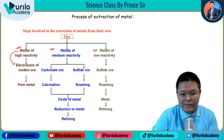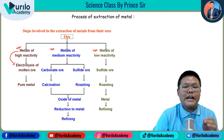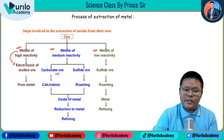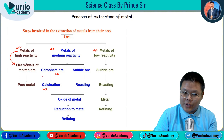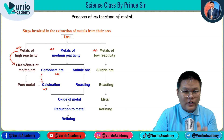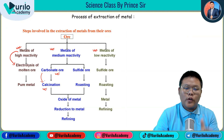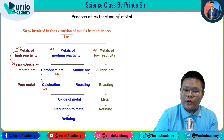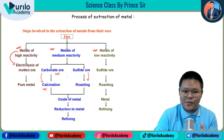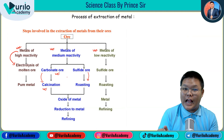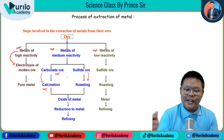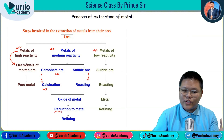When we extract metals of medium reactivity, we work with carbonate ore and oxide ore. For carbonate ores, we perform calcination, and for sulfide ores, we perform roasting — heating the ore at high temperatures. So, for medium reactivity metals, the processes of calcination and roasting are used to convert the ore to a usable oxide form, followed by reduction.